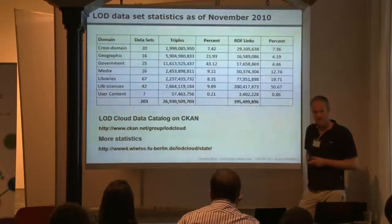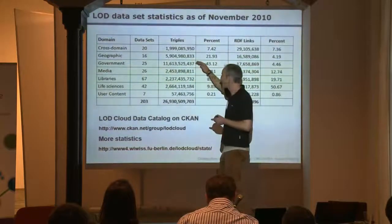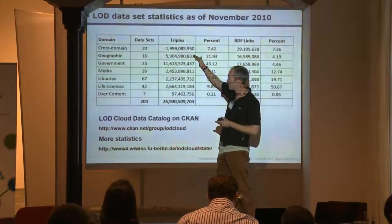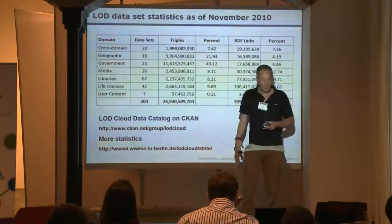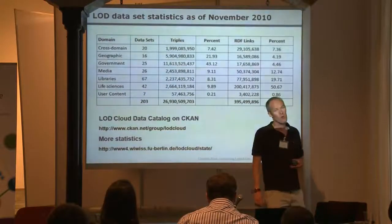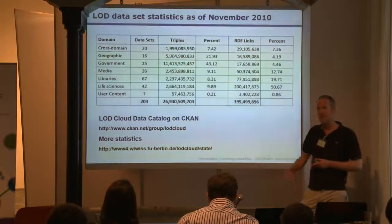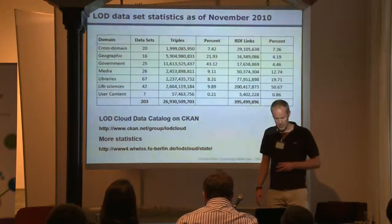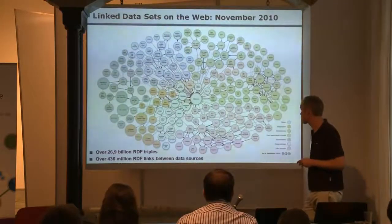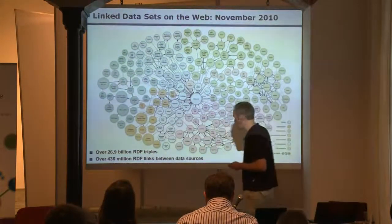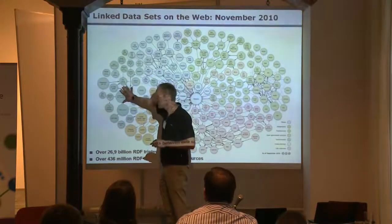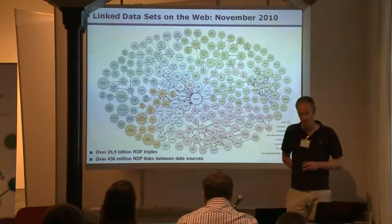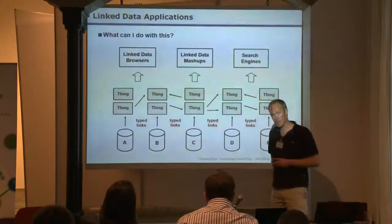The numbers split up by domain: we've heard a lot about government data — increasing amounts of e-government data are available. Life sciences has lots of data, as does geographic data. A domain where adoption is currently exploding is libraries: more and more libraries are starting to publish their catalogs as linked data and interlink these catalogs to taxonomies and norm data, which is a rather interesting development. If you were to redraw the cloud diagram now, the e-government region and the libraries area would both be much larger.